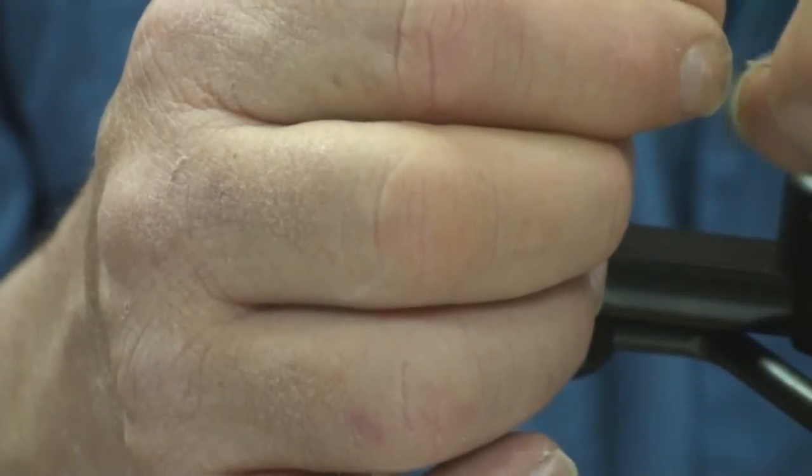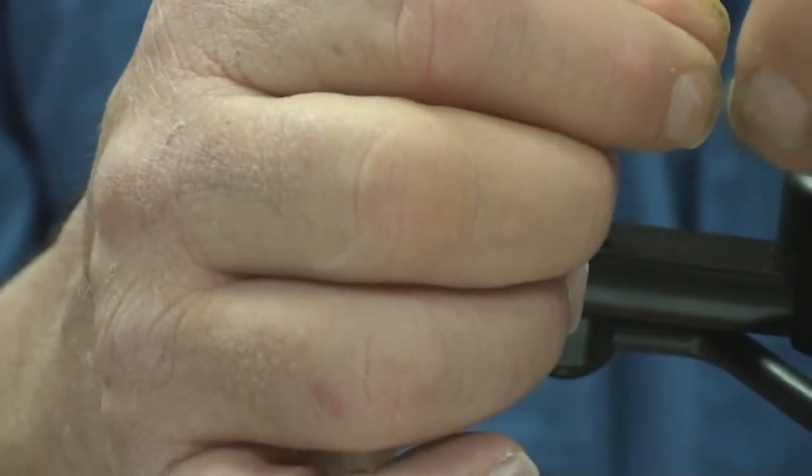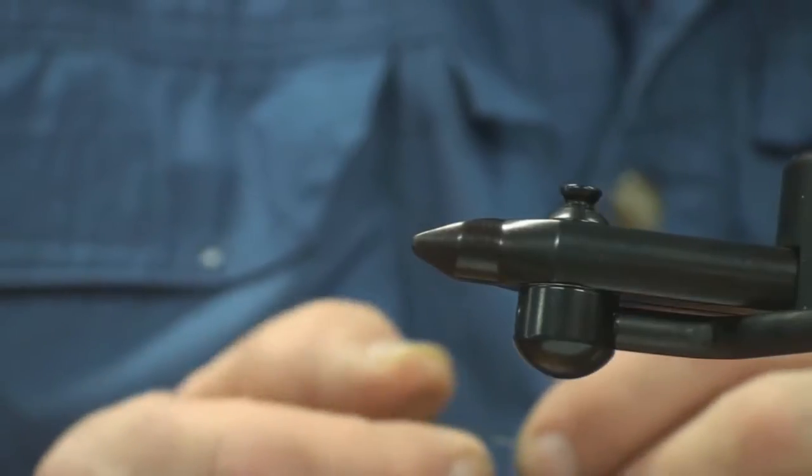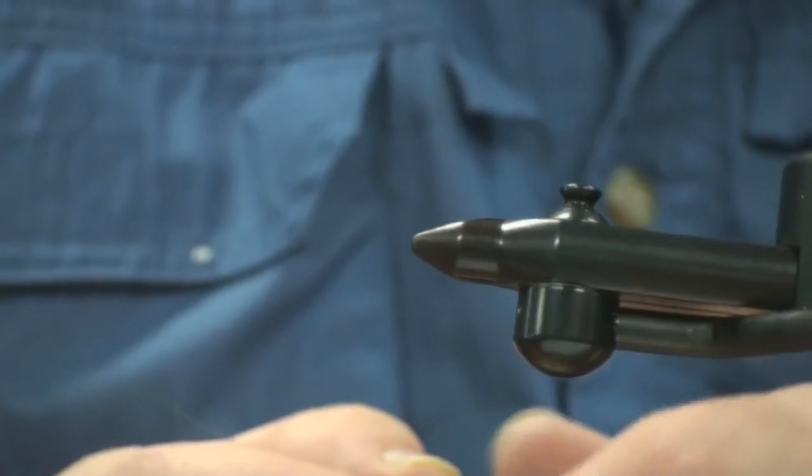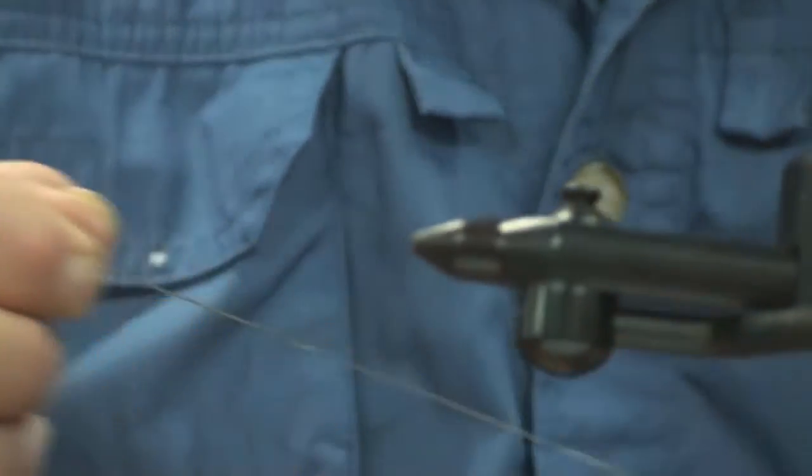Now what this tubing and wire does is gives you the translucency to the fly. This is my caddis pattern called J.C.'s electric caddis.